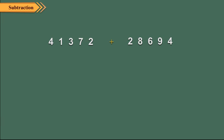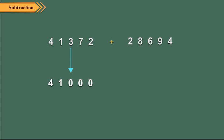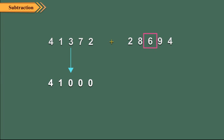The hundreds digit of 41372 is 3, so it is rounded to 41000. The hundreds digit of 28694 is 6, so it is rounded to 29000. So the estimated sum is 70000.